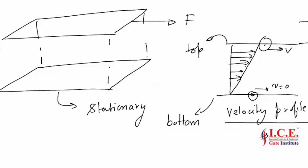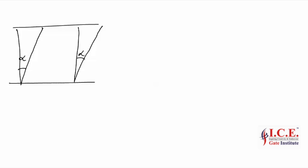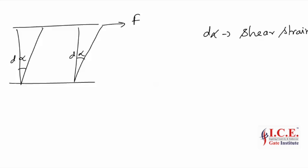The velocity profile is the relation between velocity and y, where velocity is a function of y and the velocity is in the x direction. With a small movement of the plate, the layer displaces by an angle delta alpha. This d-alpha is known as shear strain.